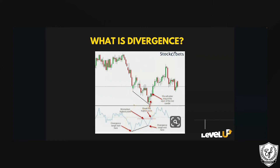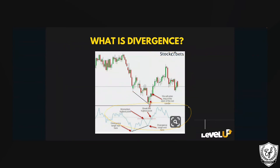Drop a one if that explanation makes sense. When we talk about divergence, what that means is the price is not agreeing — the price is not matching. There's no match when it comes to price action, the candlesticks, and the oscillator. A word people get confused about is oscillator — oscillator is just another word for indicator. It's not matching the momentum.